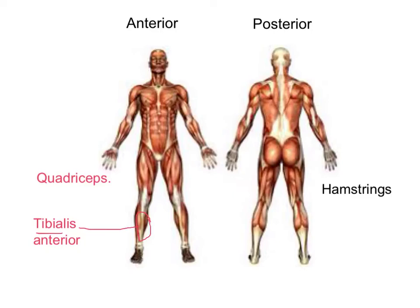Next we've got the gastrocnemius, which is the muscle at the back of your lower leg. Then we have our quadricep muscles, which is a group of four muscles on the front of your upper leg. And we've got the hamstrings, which are a group of muscles on the back of the leg.